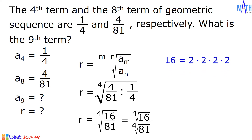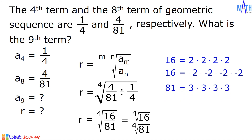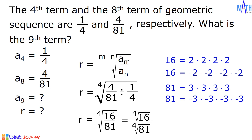Since 16 equals 2 times 2 times 2 times 2, and also negative 2 times negative 2 times negative 2 times negative 2, the 4th root of 16 equals positive or negative 2. Since 81 equals 3 times 3 times 3 times 3, the 4th root of 81 equals positive or negative 3. Therefore, the 4th root of 16/81 equals positive or negative 2/3.